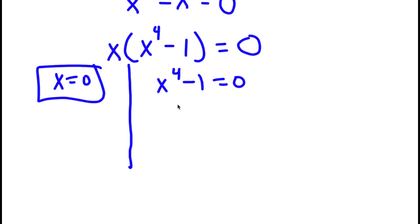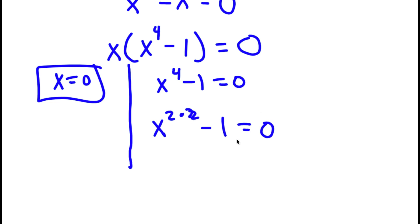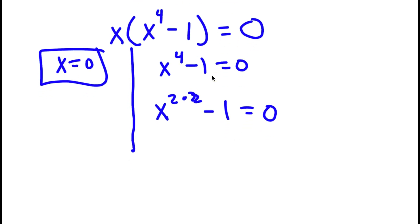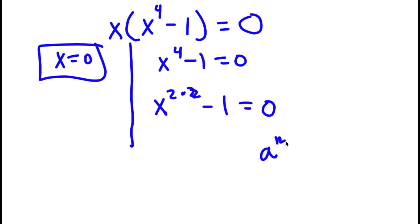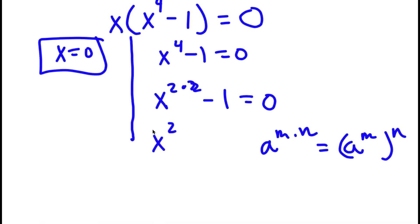Now I'm going to solve x to the power of 4 minus 1 equals 0. Well, x to the power of 4 is the same thing as x to the power of 2 times 2. And if I have something in the form a to the power of m times n, this is equal to a to the power of m to the power of n. So x to the power of 2 times 2 becomes x squared to the power of 2, minus 1 squared, which equals 0.